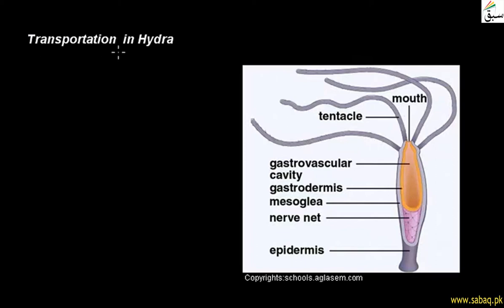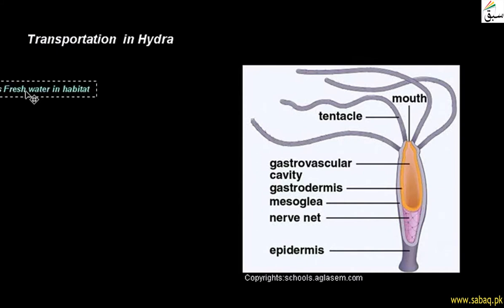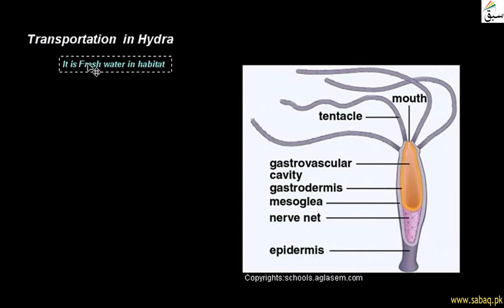Today we will study transportation in hydra. Hydra is shown in the diagram. Its habitat is fresh water, which includes rivers and lakes — this water is called fresh water.